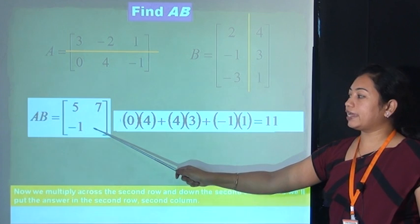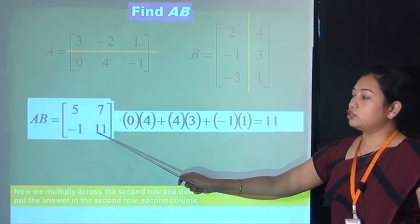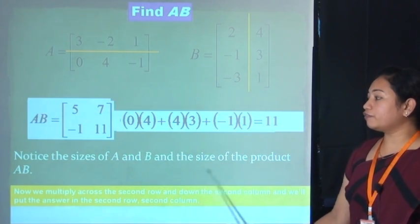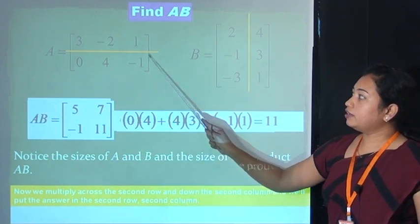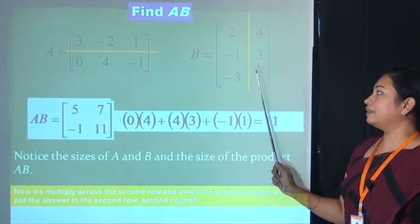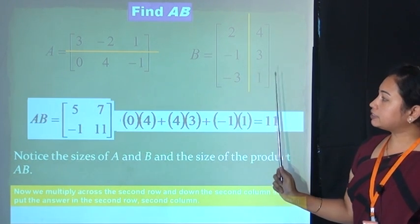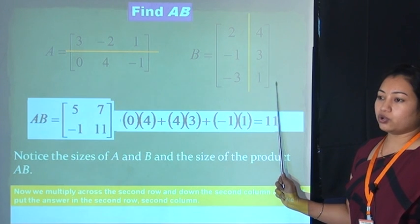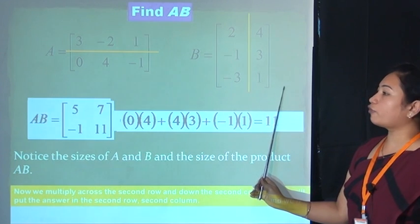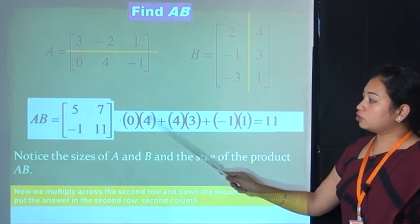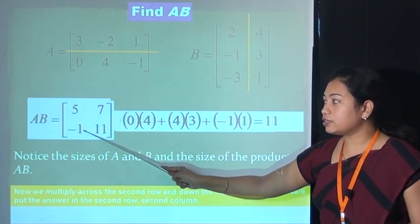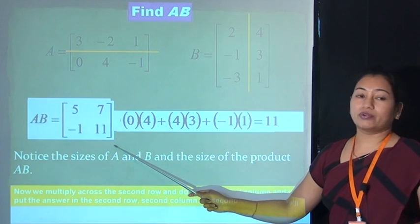Place −1 in second row first column and 11 in second row second column. Notice the size of A, B, and the product AB. Matrix A is 2×3, matrix B is 3×2, so the product AB has 2 rows and 2 columns — the product is 2×2.